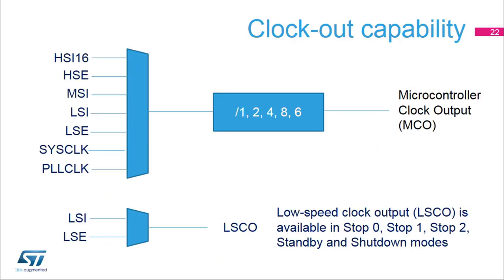The various clocks can be output on an I/O. The microcontroller clock output feature allows you to output on a pin one of these seven clocks: HSI16, HSE, MSI, LSI, LSE, SYSCLK, and PLLCLK. The low-speed clock output feature allows you to output on a pin the LSI or LSE clock. The low-speed clock output is available in stop 0, stop 1, stop 2, standby, and shutdown modes.